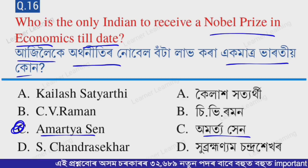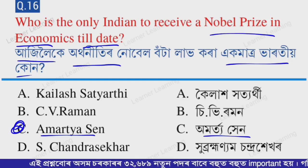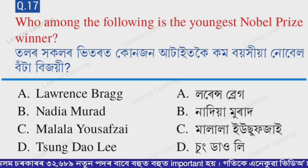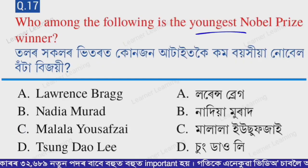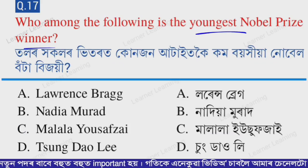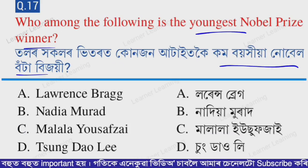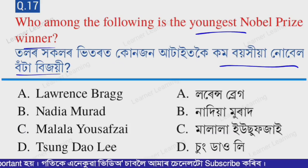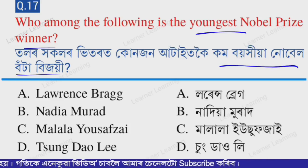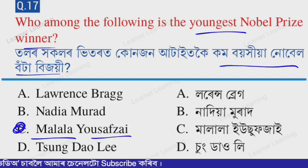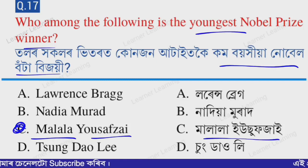It is also a very important question. Next question: Who among the following is the youngest Nobel Prize winner? The correct option is option C — Malala Yousafzai. Malala Yousafzai is the youngest Nobel Prize winner till date.